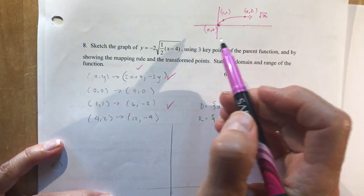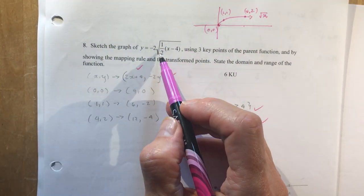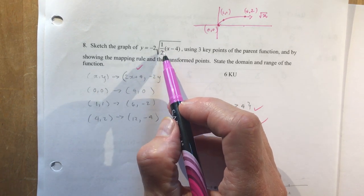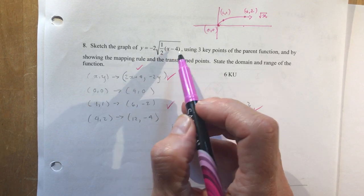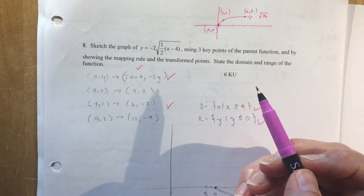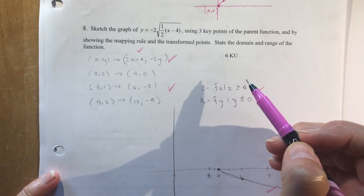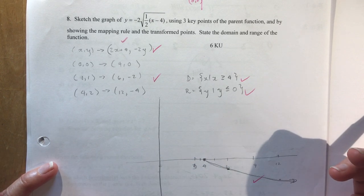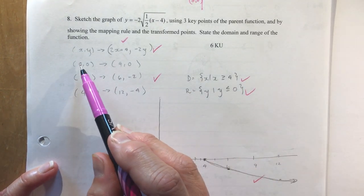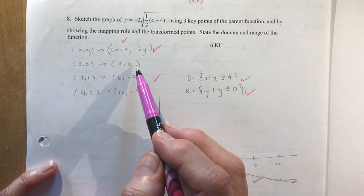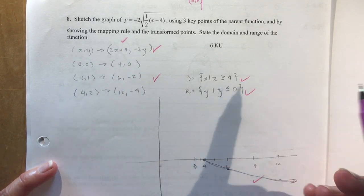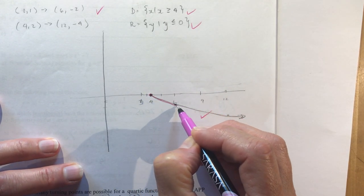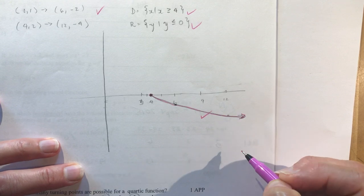Okay, so this was the equation. This is the transformed equation. So I want to know what is the mapping rule. And again, we would say, well, the x is divided by a half. So that means 2x plus 4 and minus 2y. That's it. So simple. Once you get the hang of the transformation rules and the mapping rules, it's really easy to do any transformation. So then I plugged in my value. x is zero. I get 4. y is zero. It's zero. 6 and minus 2. 12 and minus 4. And I sketched it over here. So here it is. It's going like this. So I knew where it started. And I've got it going down like this.